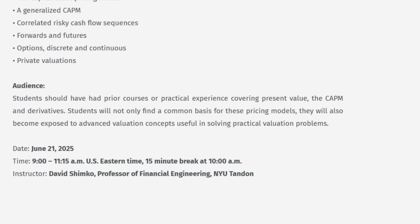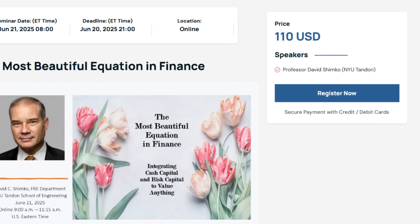It is two hours and 15 minutes, on June 21st, from 9 a.m. to 11:15 a.m. Eastern Standard Time — New York City time. It is $110 for the registration. If you're at a company, often you can get your company to sponsor it and pay for it. It's continuing education, related to typically your designations.